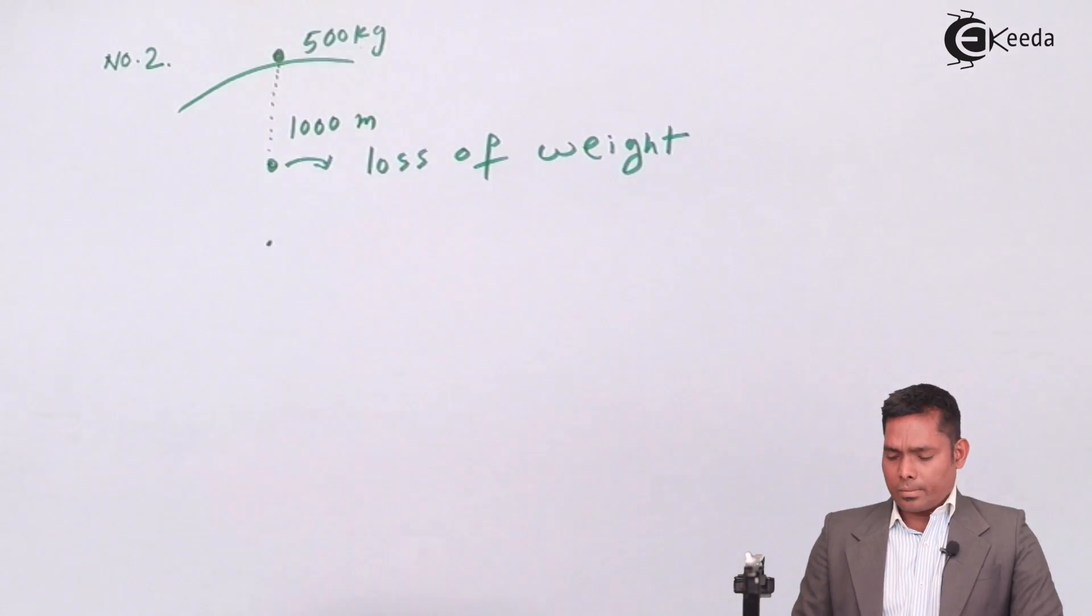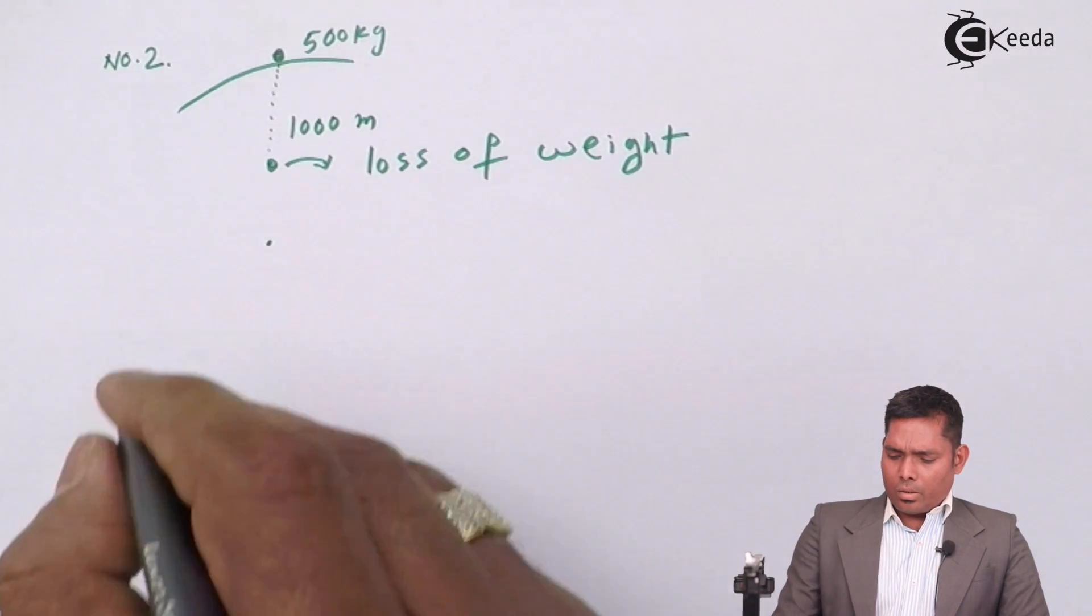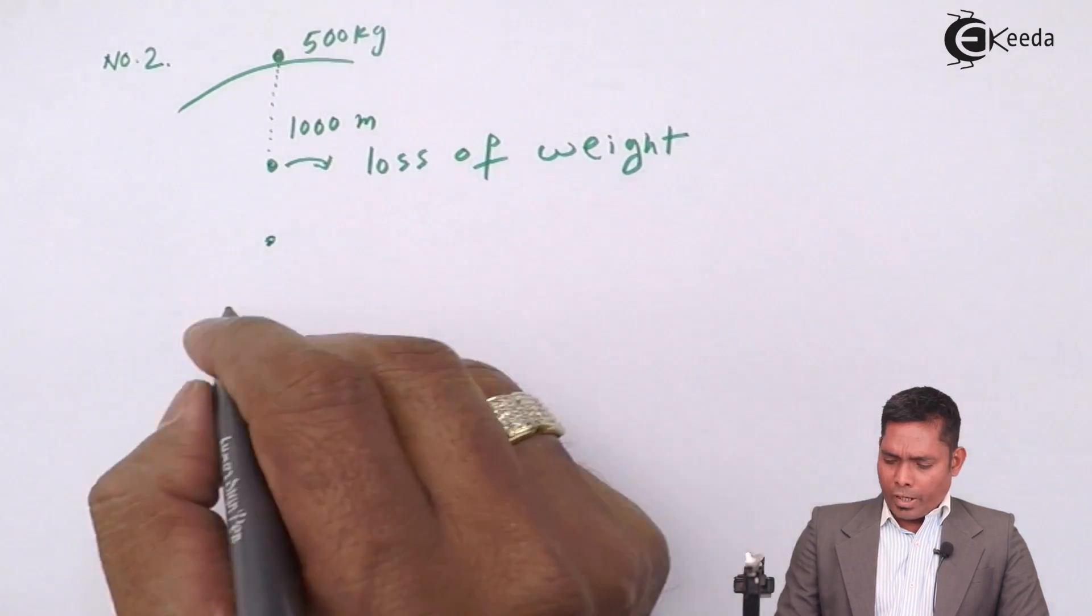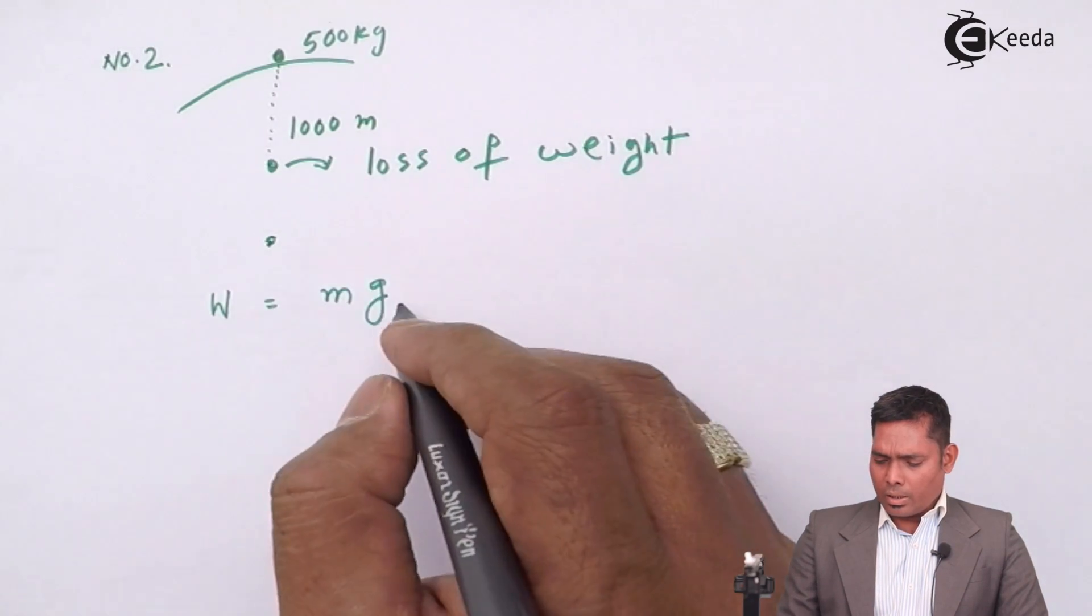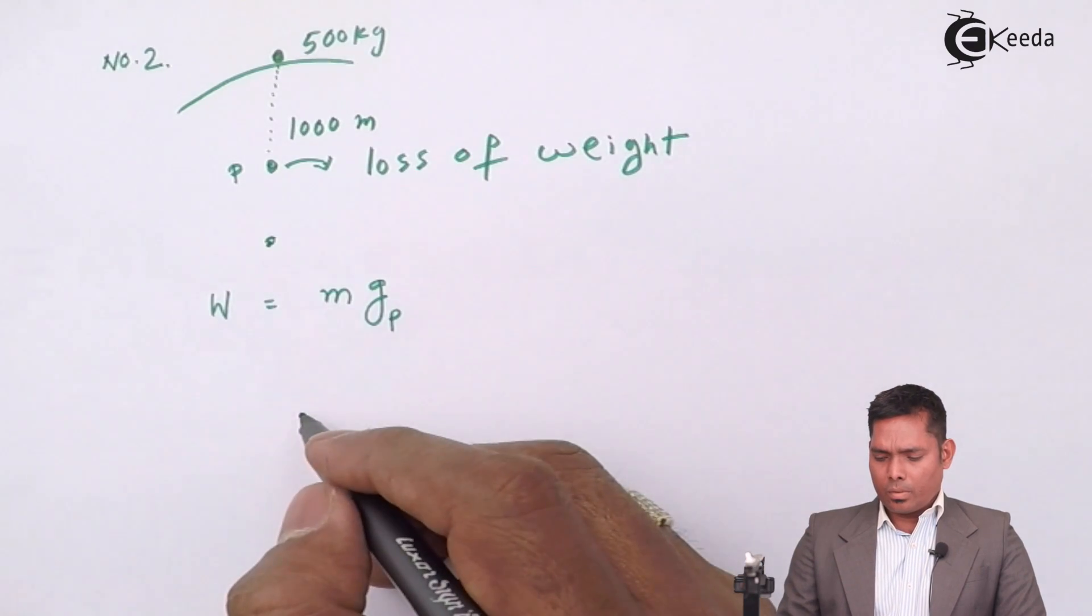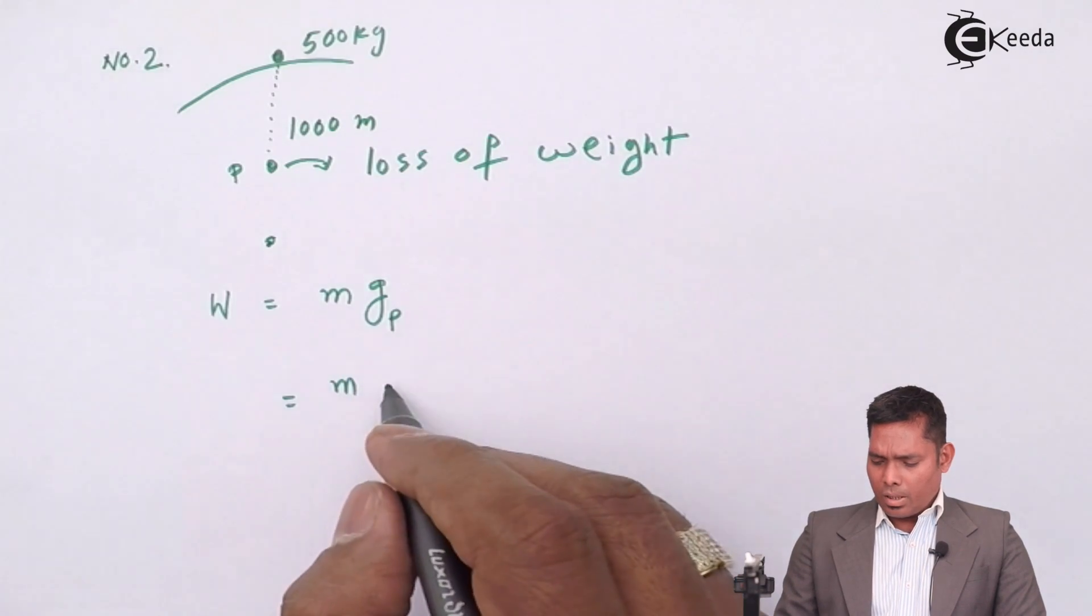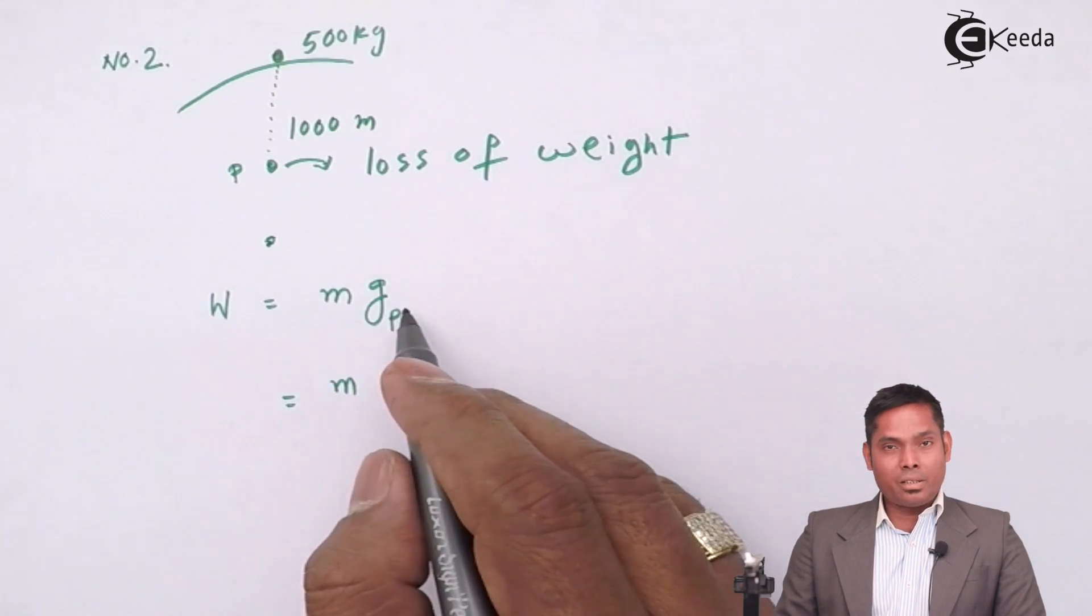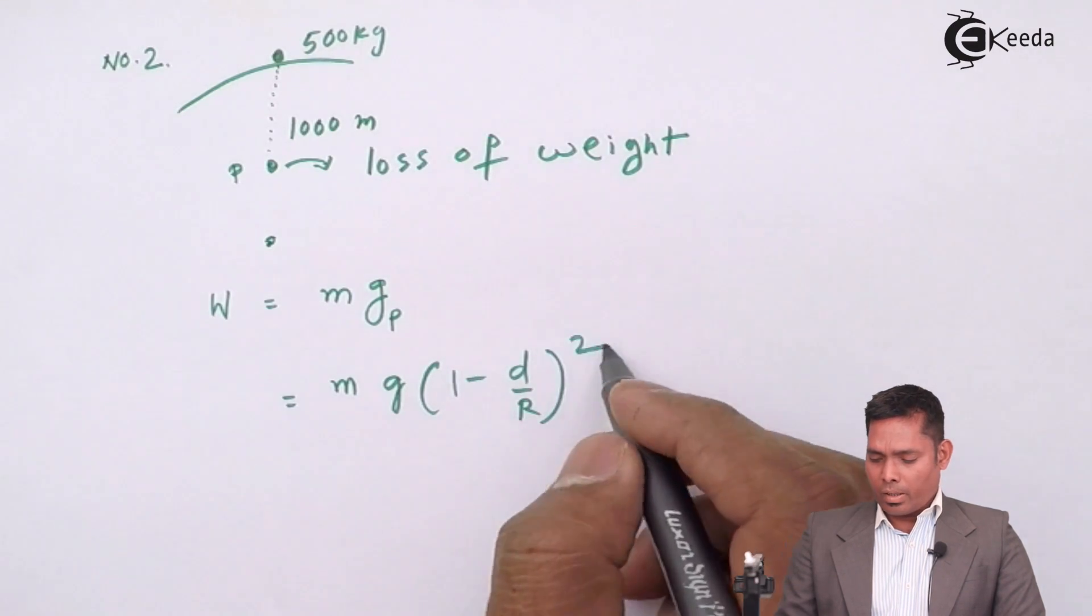You have to find the loss of weight. Now, weight will be mass of the object into g at that particular point P. Mass is given. g_P is at the inside point: g times 1 minus d by R the whole square.